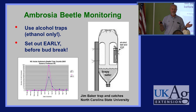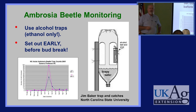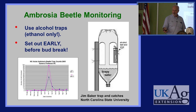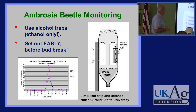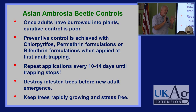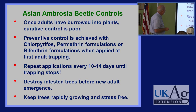Ethyl alcohol — the stuff we drink. You can also get it at the hardware store as shellac thinner. Denatured alcohol is 95% ethyl alcohol with a little methanol, and that methanol may add a little extra attractiveness. Set these traps out before your plants are budding out and showing signs of growth. The trees you've seen this beetle attacking before are the ones that need a preventive treatment.